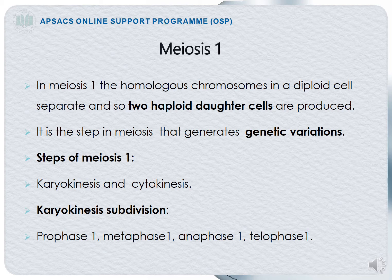In Meiosis I, the homologous chromosomes in a diploid cell separate, producing two haploid daughter cells. This is the step in meiosis that generates genetic variation. You are different from your parents and from your brothers and sisters because of genetic variation — different genetic information has been transferred from the parents to the offspring.